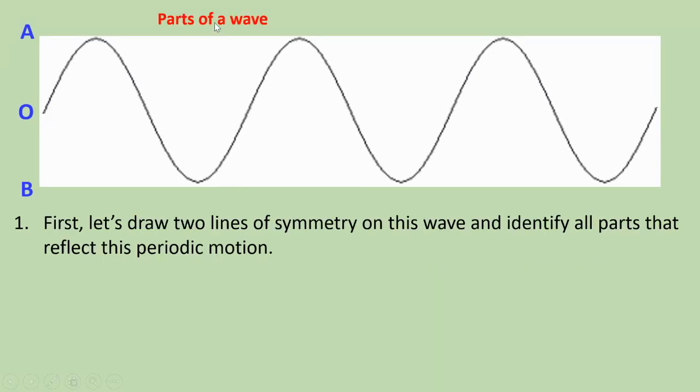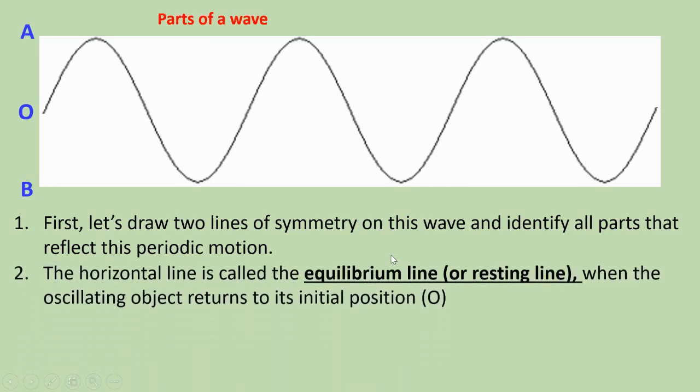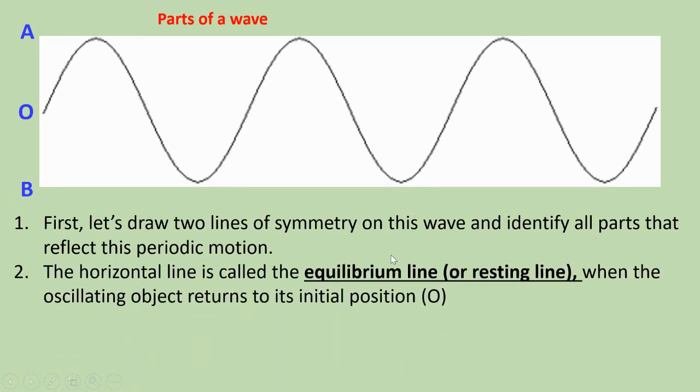Now we are going to determine the parts of a wave. First, let's draw two lines of symmetry on this wave and identify all parts that reflect this periodic motion. The horizontal line is called the equilibrium line, or resting line, when the oscillating object returns to its initial position.